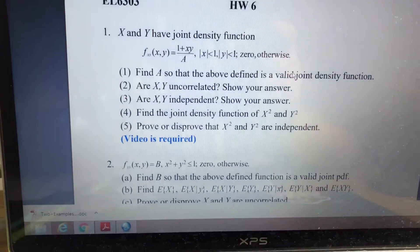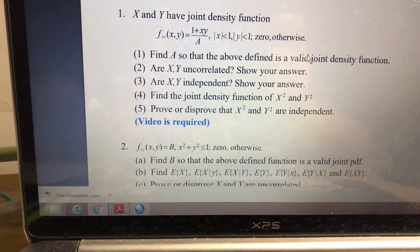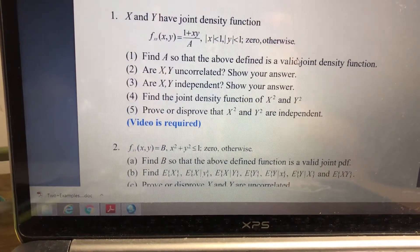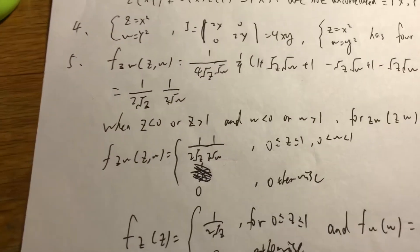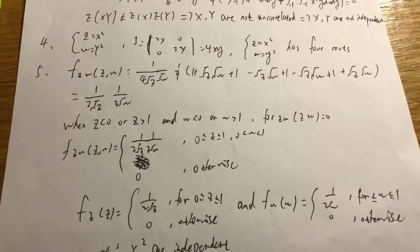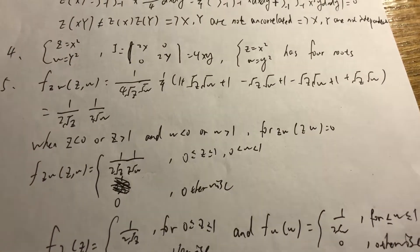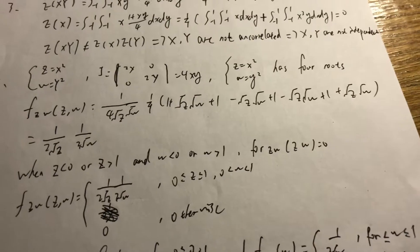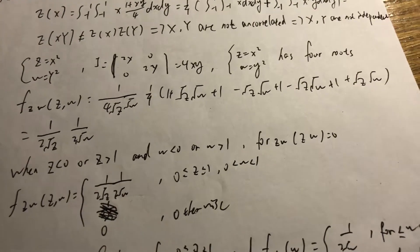After that, for questions 4 and 5: find the joint density function of x squared and y squared, and prove that x squared and y squared are independent. So let z equal x squared and w equal y squared. The Jacobian matrix gives 2x and 0, 0 and 2y, so the Jacobian equals 4xy. Note that z equals x squared and w equals y squared have 4 roots.